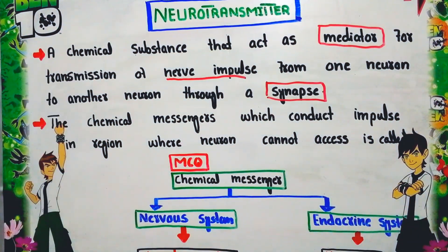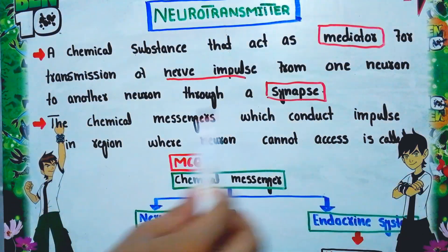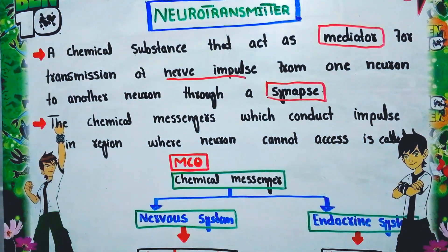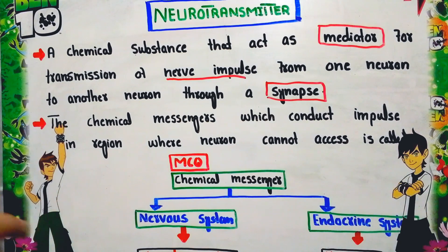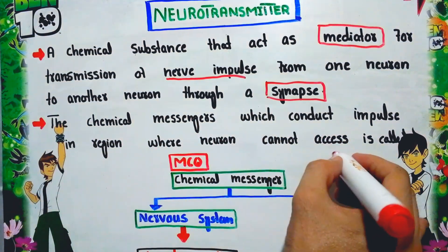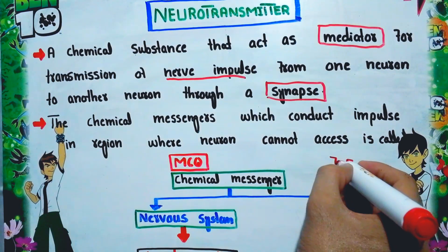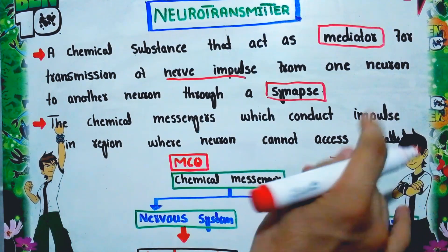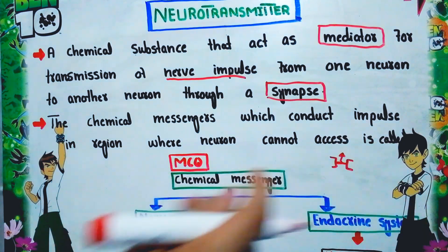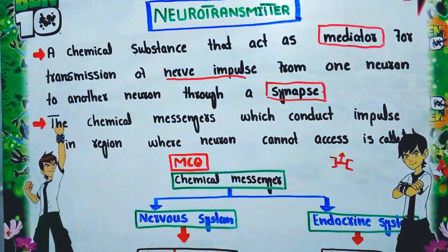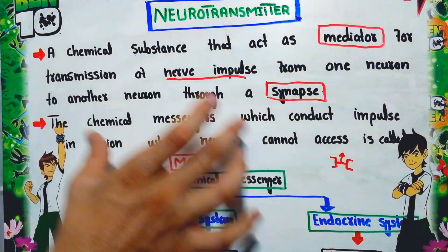A second definition of neurotransmitters: these are chemical messengers which conduct impulse in the region where the neuron cannot act directly. The neurotransmitter carries the message right at the place where the neuron cannot access — at the synapse — so transmission occurs with the help of this chemical messenger.